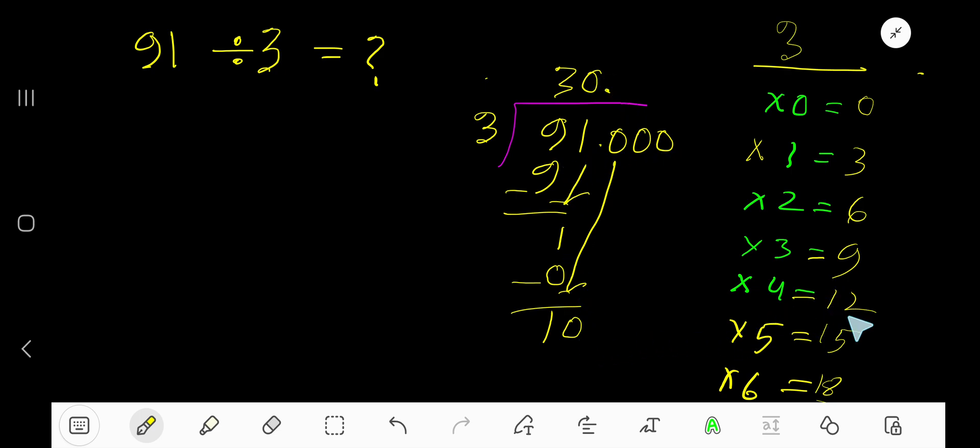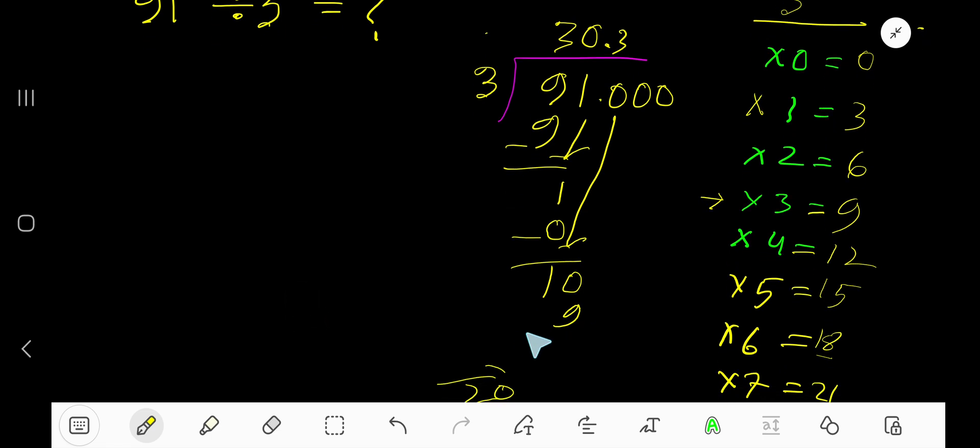3 goes into 10 how many times? 3 times. Write 3. 3 times 3 is 9. Subtract 1.